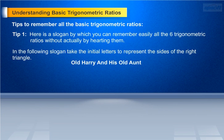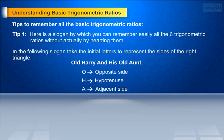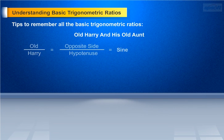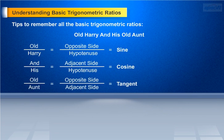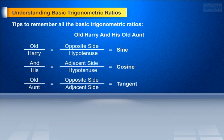The slogan is: Old Harry and his old aunt. Here, O represents the opposite side, H represents the hypotenuse, and A represents the adjacent side. Take the first two pairs of words to remember sine. Old by Harry equals opposite side by hypotenuse, which is equal to sin A.